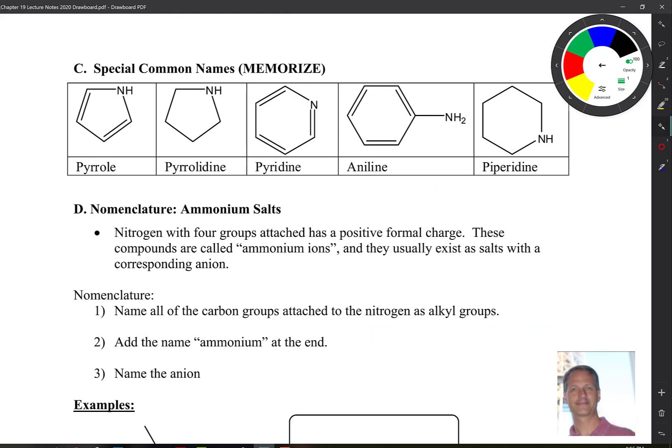Now the only other thing that we have left that we need to discuss is we need to discuss some common names and then how to name these ammonium salts. So we have the following five common names. We've seen aniline before, pyridine, pyrolidine, pyrrole, piperidine. All these are compounds that you should basically be familiar with because they're compounds that come up in the common language of organic chemistry.